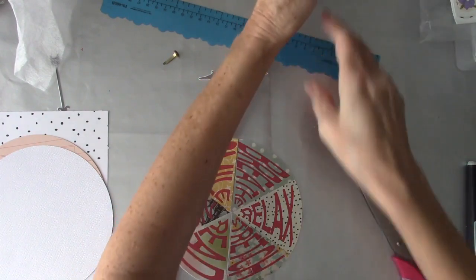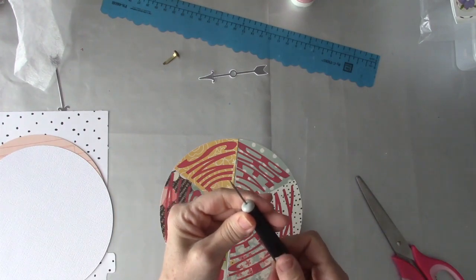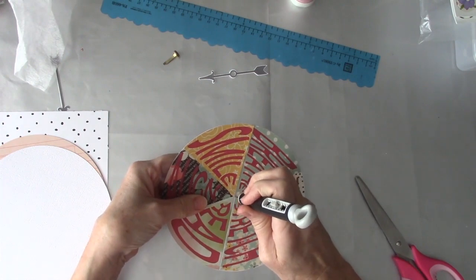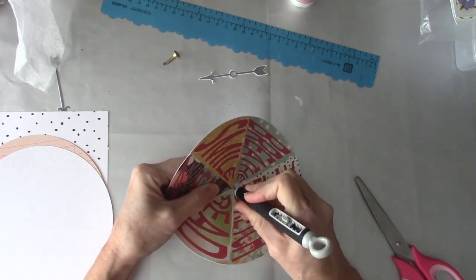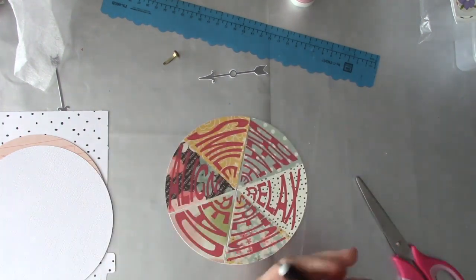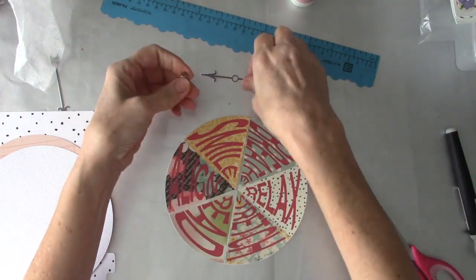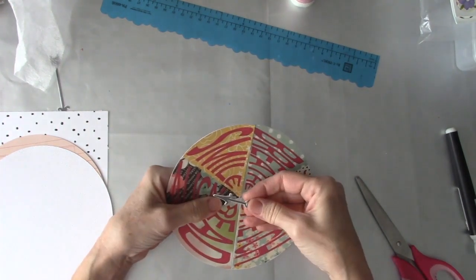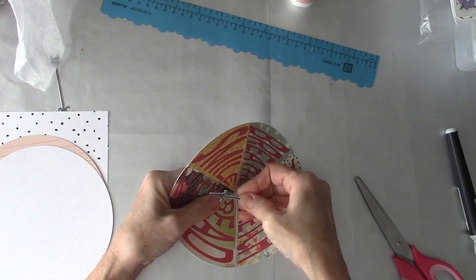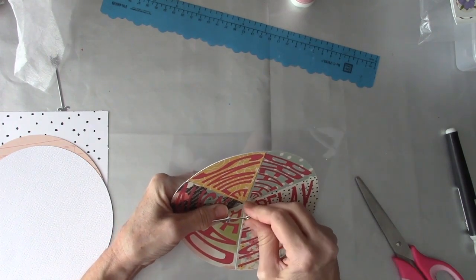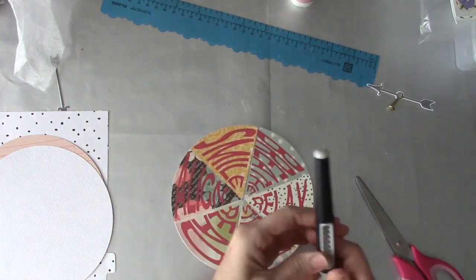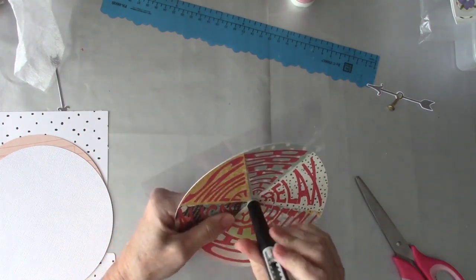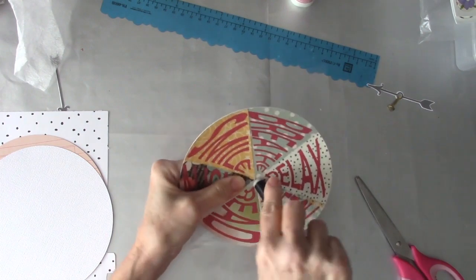Now I'll use my pokey tool to poke a hole right in the middle here. Yeah, that went through pretty good. Maybe that hole needs to be a little bit bigger. Pull it all the way out and see if we can make that hole bigger.